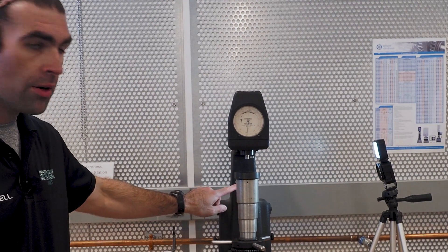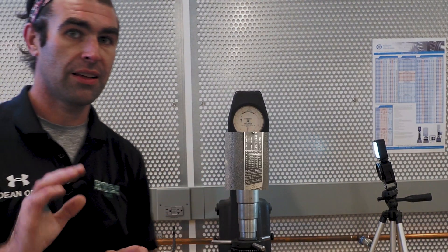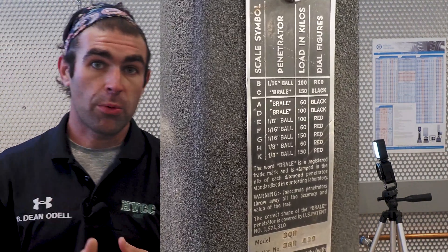So you might wonder how you know which combination of indenter and weight to use. The answer should be written on the machine somewhere. In our case, it's written right on the back of the machine. It gives you the name of the Rockwell test and the combination you should use. I'm only going to talk about three: Rockwell C, A, and B.